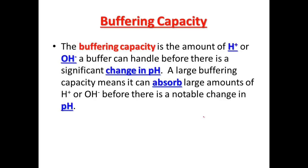We'll start with buffer capacity. Buffer capacity is the amount of hydrogen ions or hydroxide ions that a buffer can handle before a significant change in pH occurs. A large buffering capacity means it can absorb large amounts of those two ions before a noticeable change in pH takes place. So a good buffer is one that can absorb large amounts of those two ions.